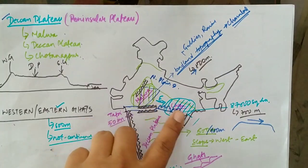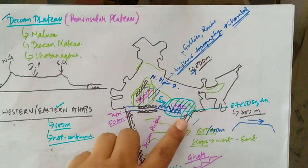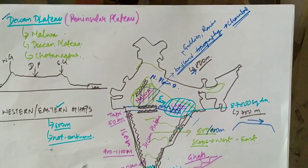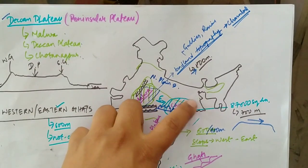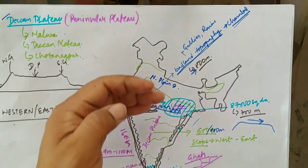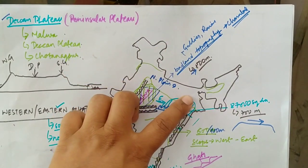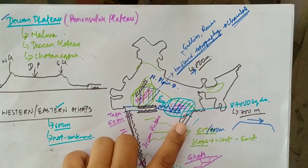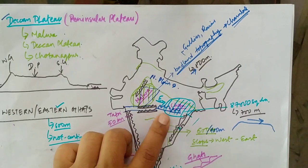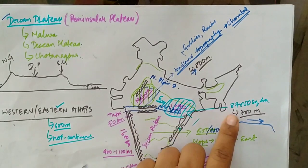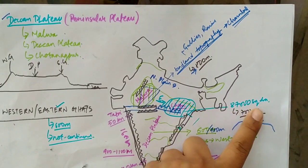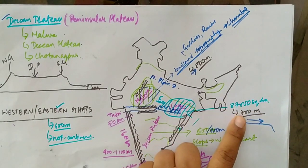Now the Chotanakpur Plateau lies completely on the eastern part of the Malwa Plateau. Towards the north are the Northern Plains, and towards the south are the Makal and Mahadev Hills. The Chotanakpur Plateau consists of the states of Jharkhand, Chhattisgarh, and some parts of West Bengal. It is very important because it has very rich mineral resources.